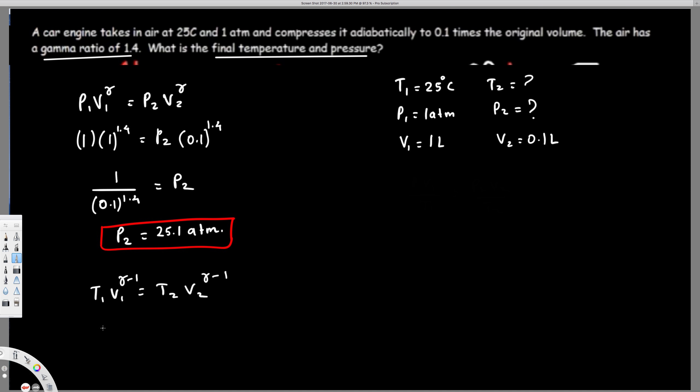That's the one we're going to use. Let's plug the values. T1 equals 25 degrees Celsius, but to use this one we have to convert to Kelvin, so we simply add 273 to this value, giving you 298 Kelvin, times 1^(1.4 - 1), which is 0.4.